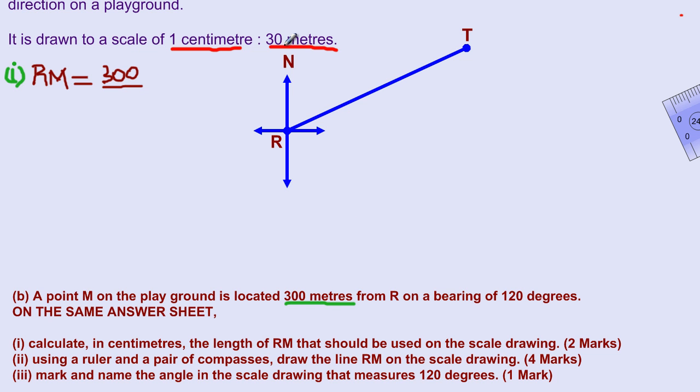A zero will cancel out with a zero there, and three into 30 goes ten times. So our map distance will work out to be ten centimeters. That's our answer for part one.